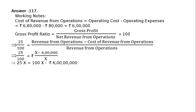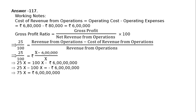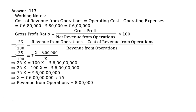This implies 25x equals 100x minus Rs. 6,00,000. Rearranging, 25x minus 100x equals minus Rs. 6,00,000, giving minus 75x equals minus Rs. 6,00,000. Therefore x equals Rs. 6,00,000 divided by 75, so revenue from operations equals Rs. 8,00,000.